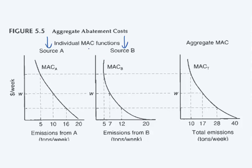Now we're going to add Source A to B in order to get the aggregate, or total, marginal abatement costs. Let's start at the cost of W given to us on the figure.